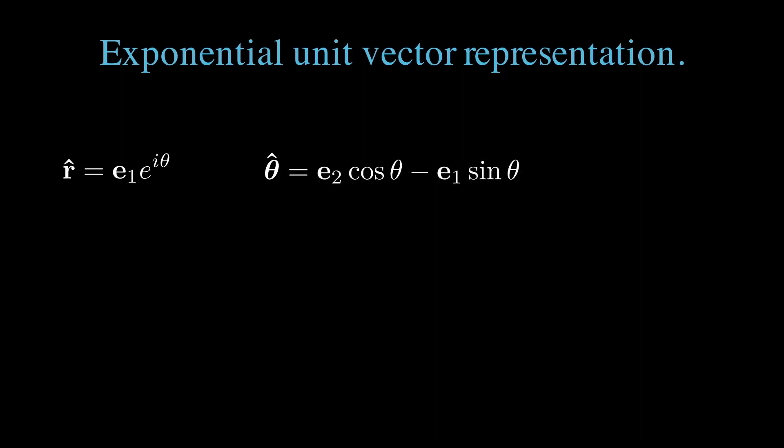We can do the same thing for the theta hat vector. This time I'm introducing a factor of 1 as e2 squared. We can factor out the e2, leaving e2 times cos theta minus e2 e1 sine theta.